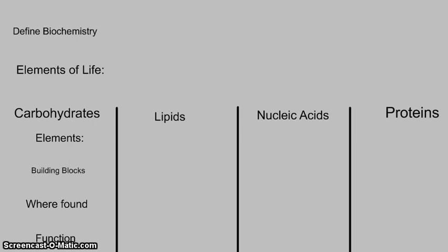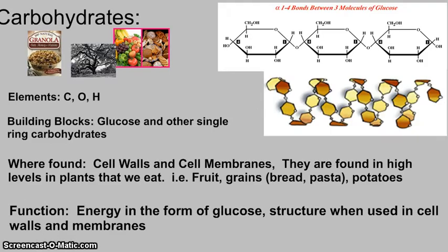Now we're going to talk about the four macromolecules: carbohydrates, lipids, nucleic acids, and proteins. For each one you should know the elements that make it up, the building blocks, where it can be found, and what function it holds for living things. Divide your paper into columns for each, and prepare a sheet to record this information.